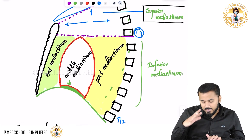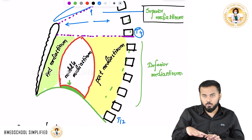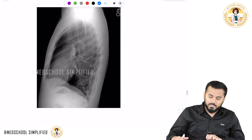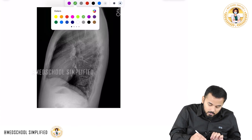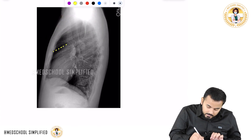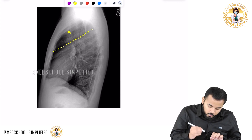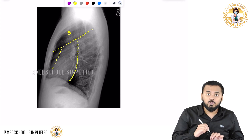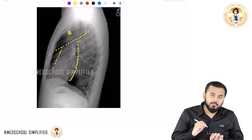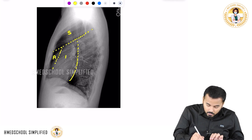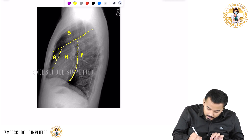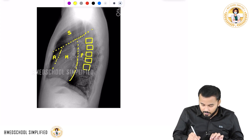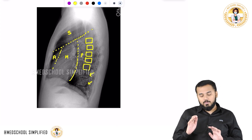Now looking at the x-ray — if I draw a line here, this upper part becomes the superior mediastinum. The globular structure here is the heart. Drawing lines further divides it into three: anterior mediastinum, middle mediastinum, and posterior mediastinum. You can also clearly see the vertebrae located at the back.